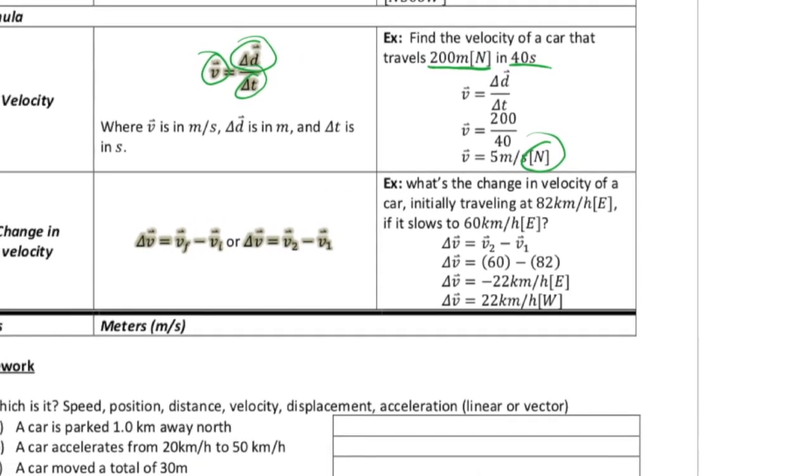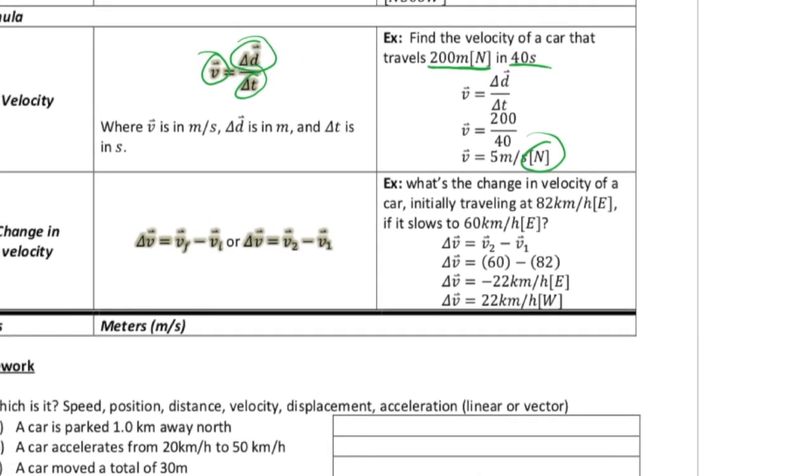Now let's talk about the change in velocity. So in this case, we have an initial velocity of 82 kilometers per hour to the east. And because we're traveling, we have a direction. We have to say velocity, not speed. So that's 82 kilometers per hour east, and it slows to 60 kilometers per hour east. So when we do this,